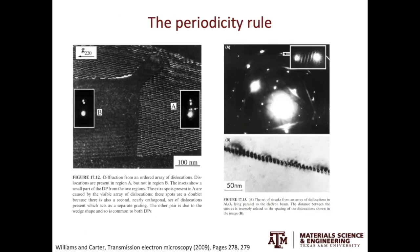Let's take a step even further. If you have periodic features in the micrograph, the periodicity will be reflected in the diffraction pattern. In the micrograph on the left, you see an ordered array of dislocations. Such order is represented by extra spots in the diffraction pattern. In contrast, in region B there are no such dislocations, and therefore there are no additional spots present in the diffraction pattern.